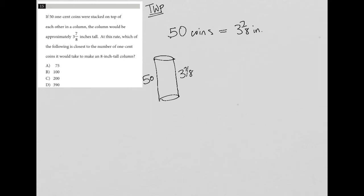The next sentence says: at this rate, which of the following is closest to the number of one cent coins it would take to make an eight inch tall column? So that means the right hand side of this relationship is going to be eight inches, but we don't know the number of coins that gets us there. This is a perfect setup for using a proportion.